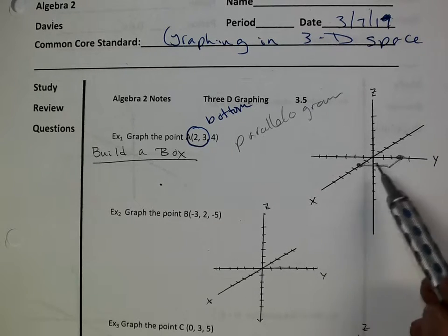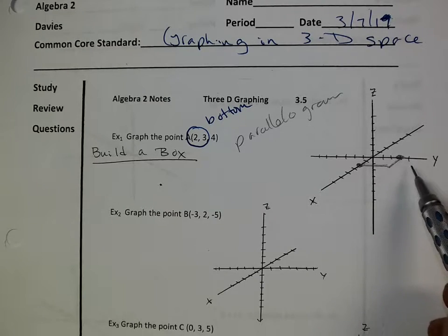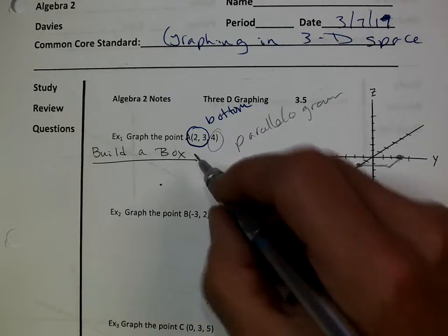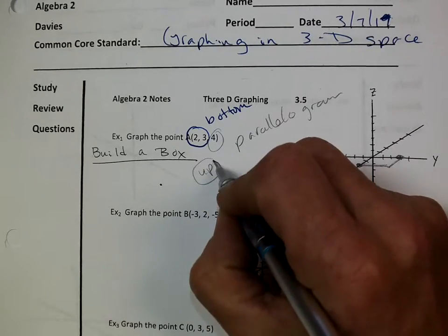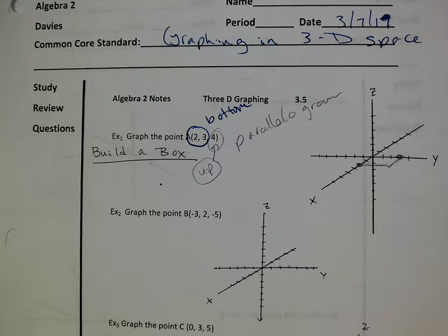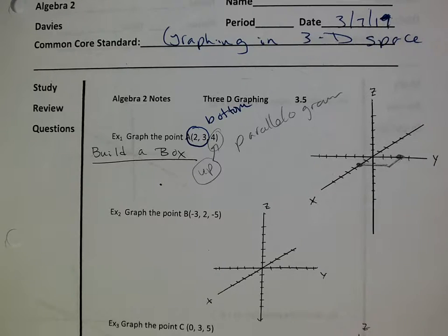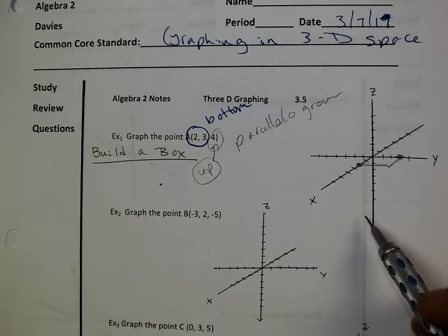Draw a little parallelogram — parallel to the x-axis, parallel to the y-axis. Then I'm just going to go from all four corners and go up 4 on the z-axis: 1, 2, 3, 4. So I've got the bottom of my box. Everybody good on that? Thumbs up — everybody's got the bottom.